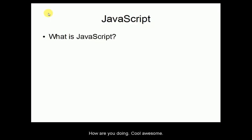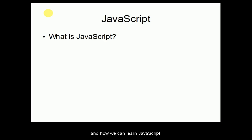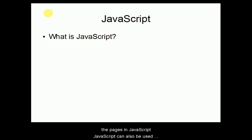Hi everyone! Today you will learn what exactly JavaScript is, and we will also plan how we can learn JavaScript step by step from the very basic level to the advanced level. JavaScript is a programming language that can be used at the client side — mainly in browsers or HTML pages — but with modern JavaScript, it can also be used at the server side with the help of Node.js.